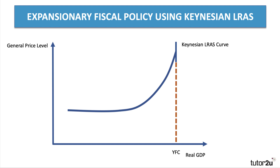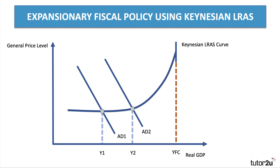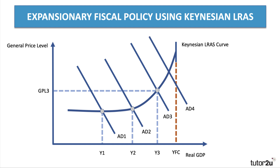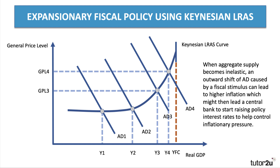You could use the Keynesian long-run aggregate supply curve to show the effect of fiscal policy. When aggregate supply is elastic, an increase in government spending will cause an increase in GDP without any significant risk of inflation. But if the aggregate supply curve is becoming more inelastic — for example, if we move from AS3 to AS4 — then an outward shift of demand caused by fiscal stimulus can lead to higher inflation, as you can see on the axes. That might then prompt the central bank to start raising policy interest rates to control inflation.